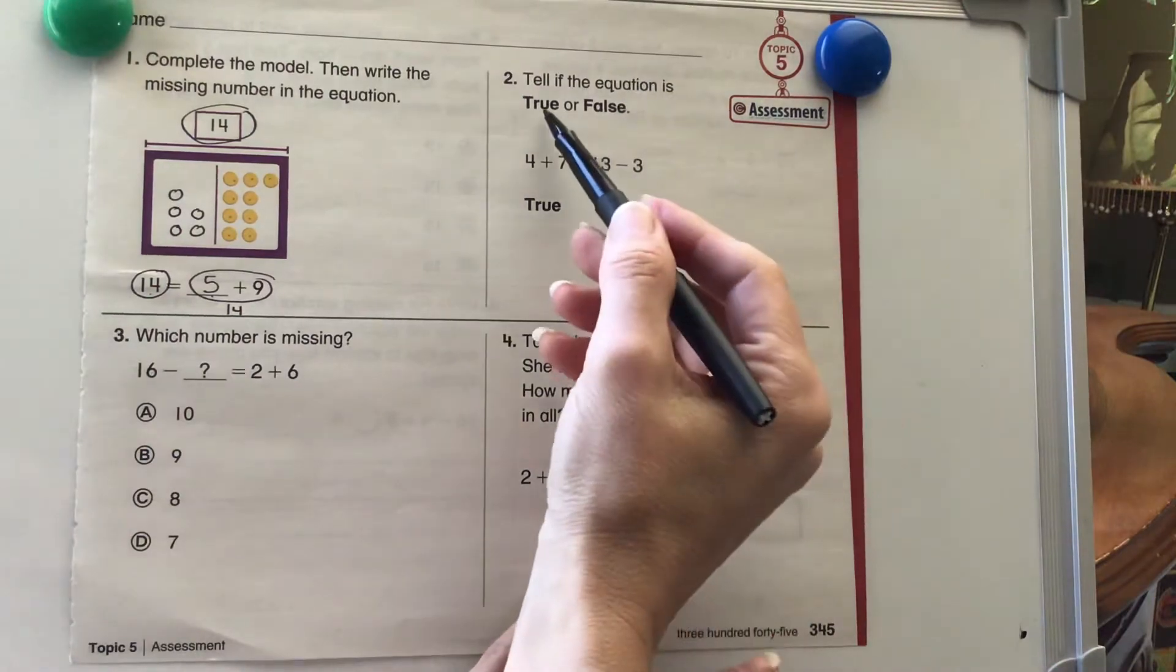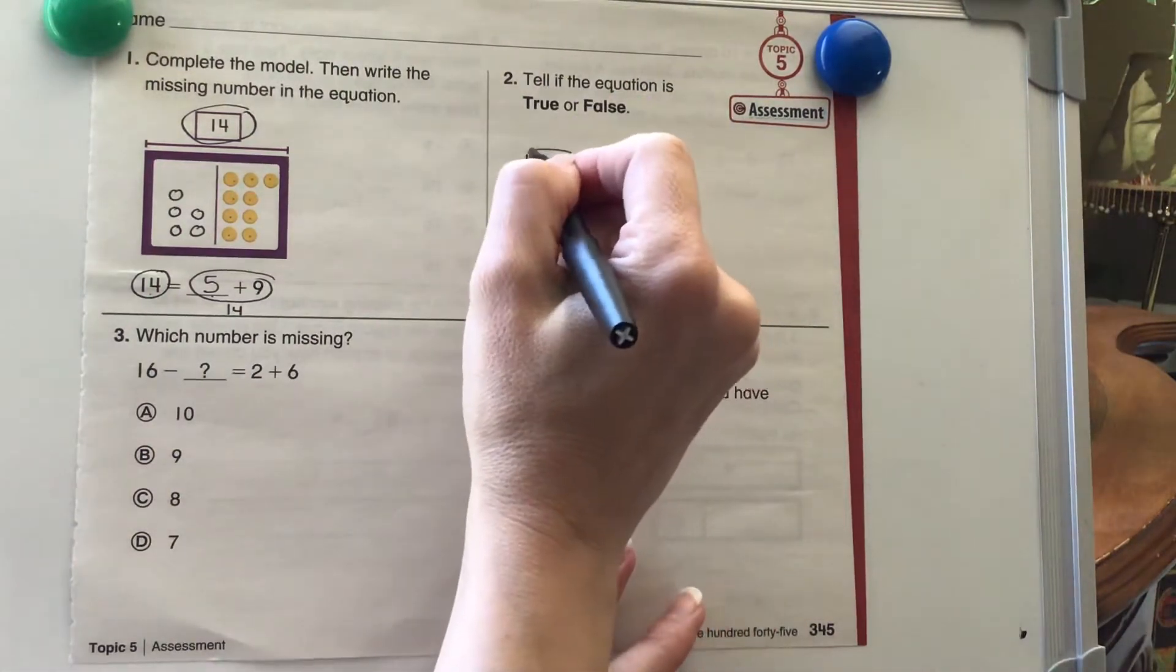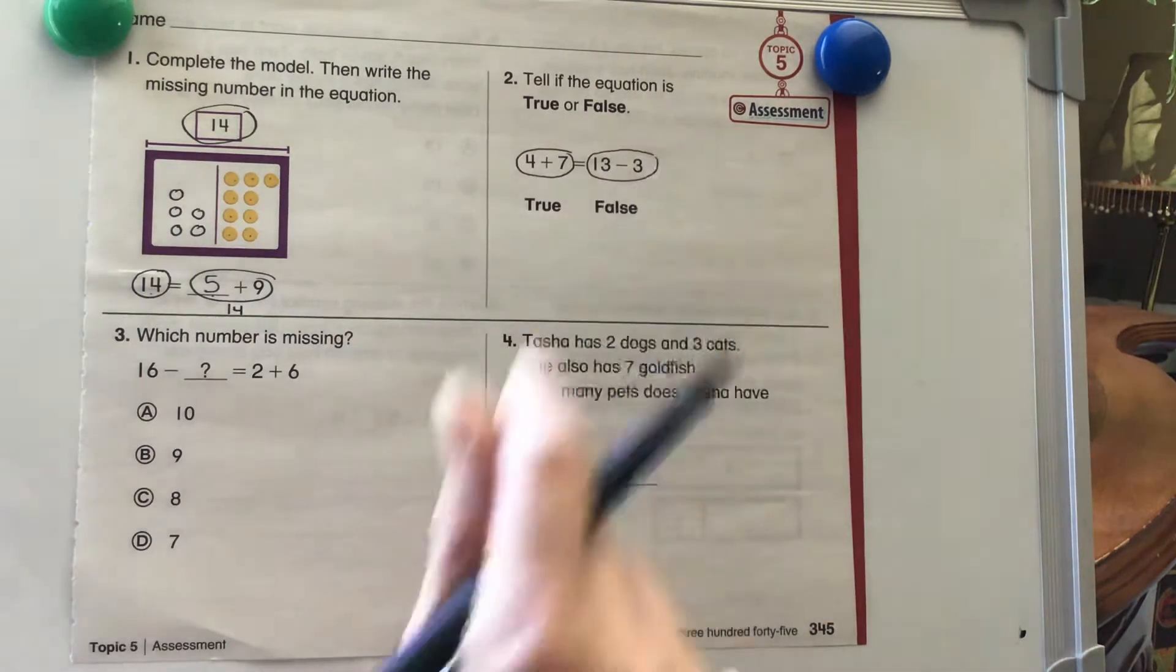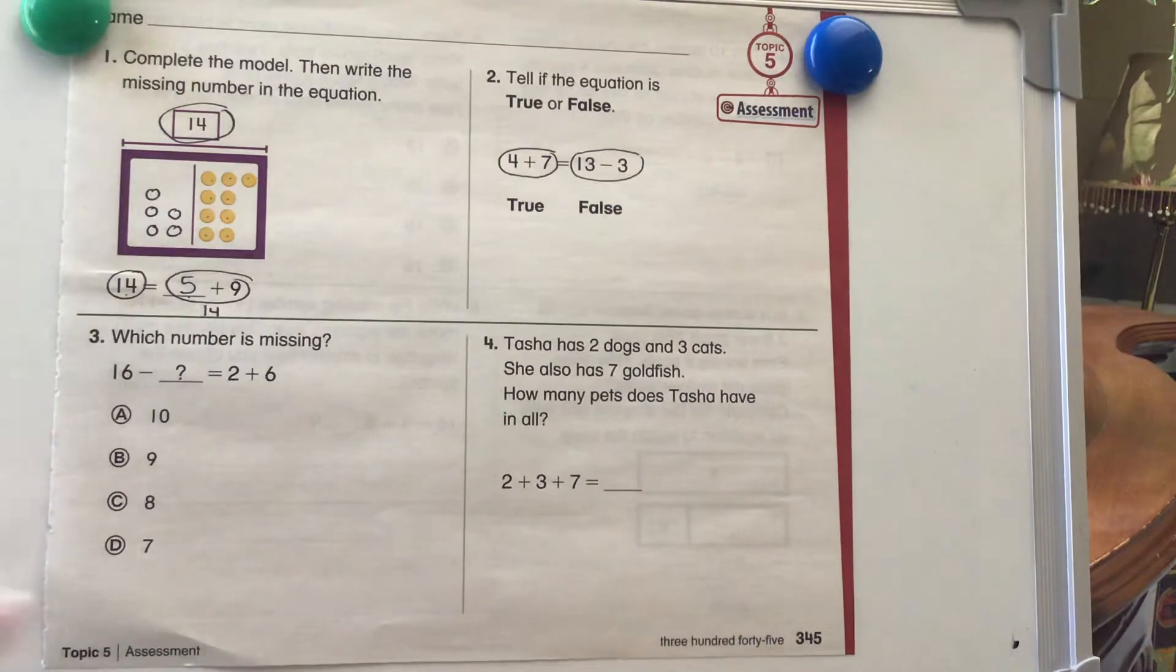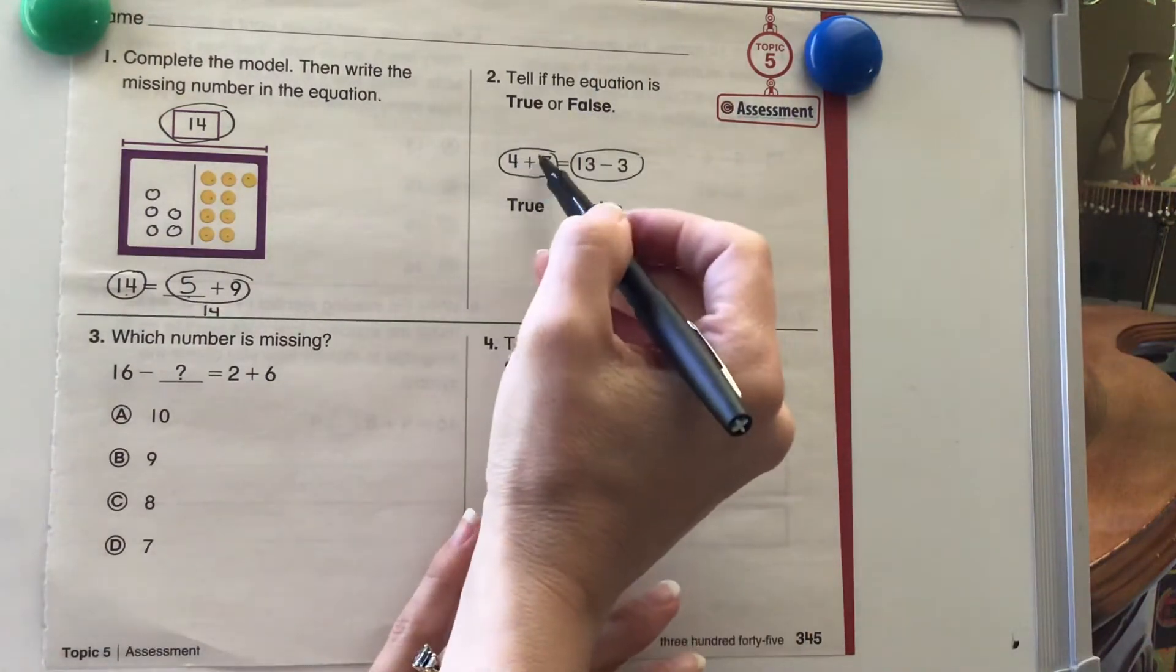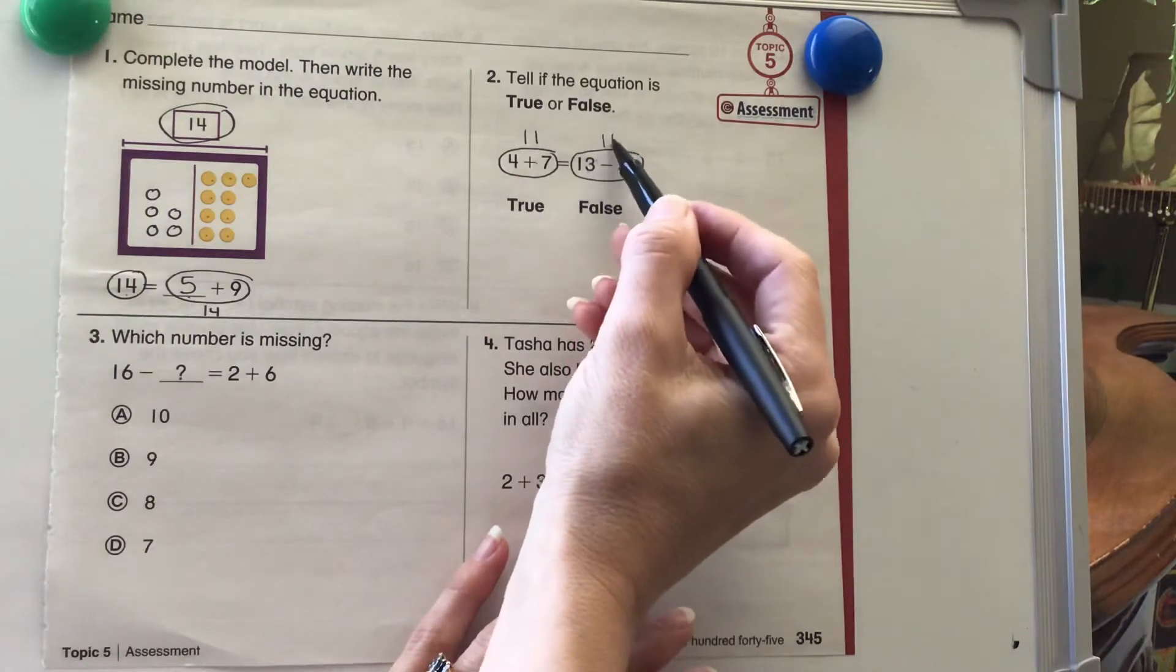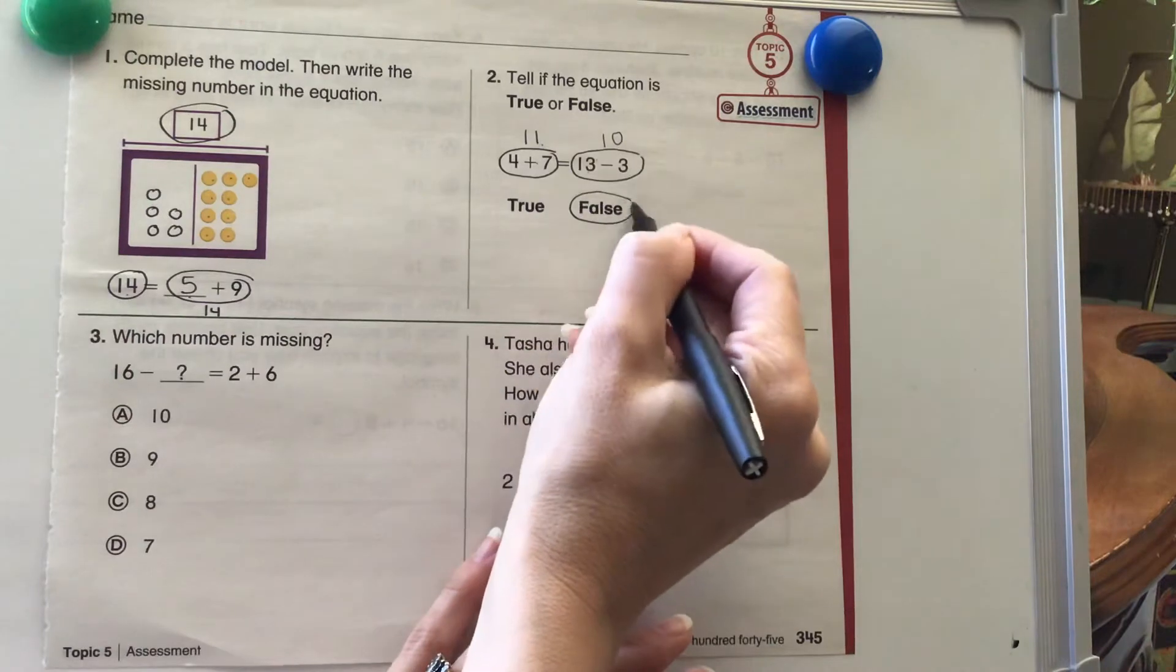Tell if the equation is true or false. Remember, equal sign means the same as. We have 4 plus 7. Does 4 plus 7 equal the same as 13 minus 3? You can pause the video and do your answer and then come back and check it. I know that 4 plus 7 equals 11 and 13 minus 3 equals 10. So 11 equals 10? Nope, that is false.